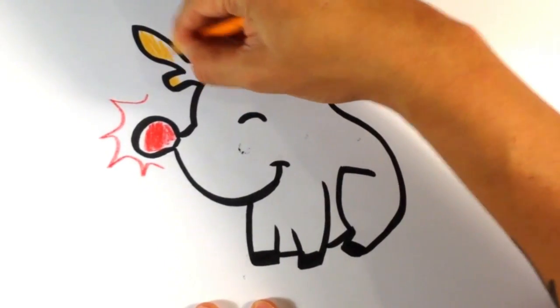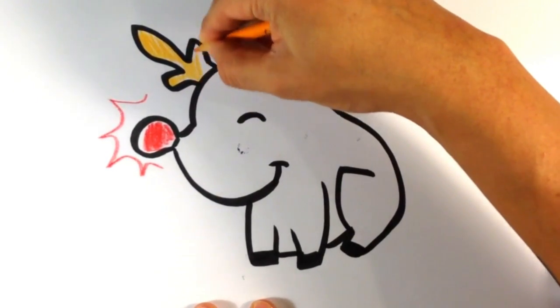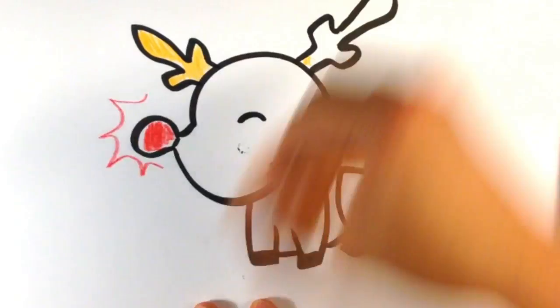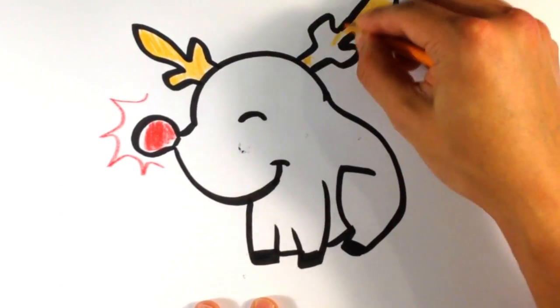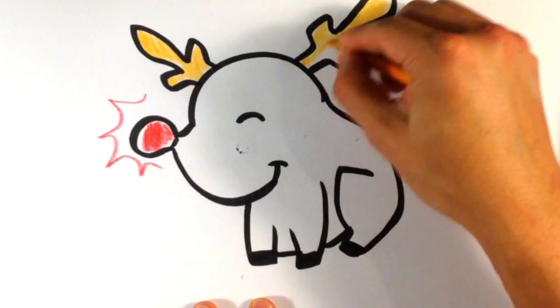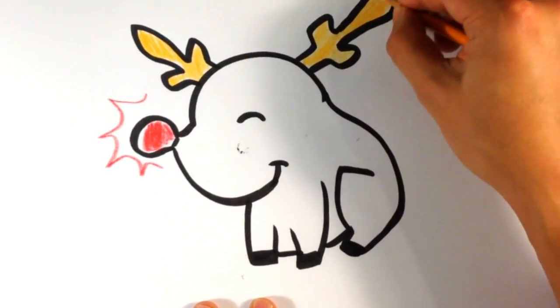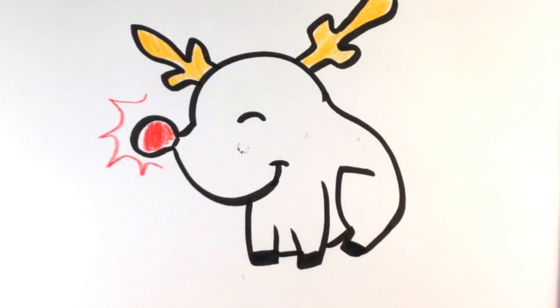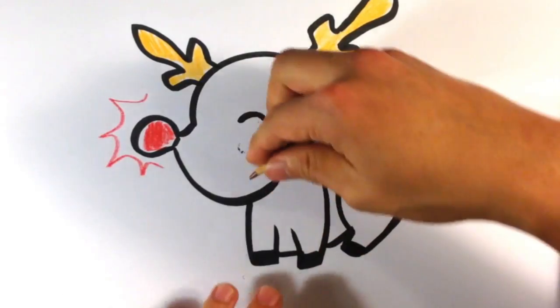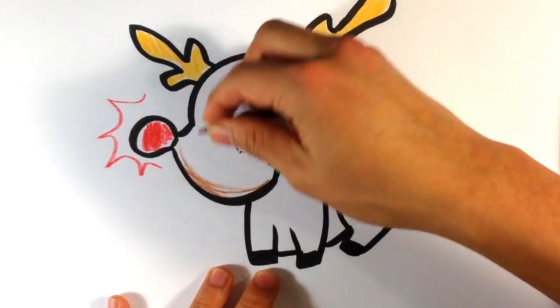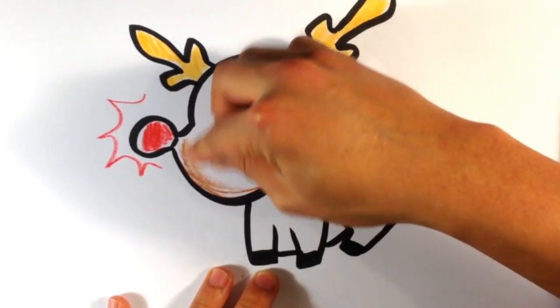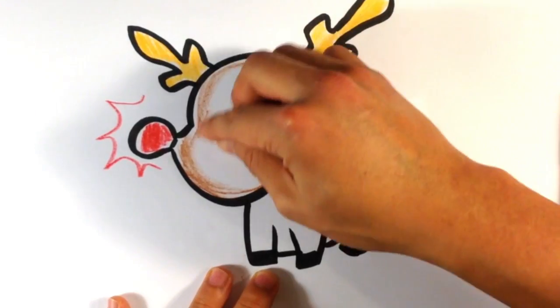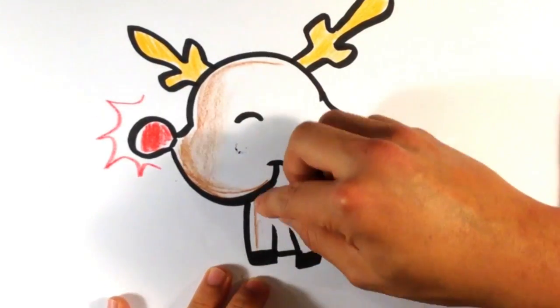It's like an orange yellow. And we are going to go in with a brown for the body. Let me sharpen this real quick.